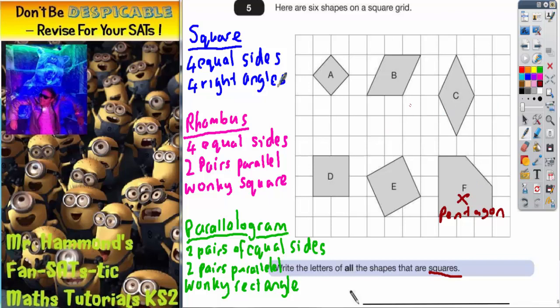Now what else can we say? Well, it's got 4 equal sides and it's got 4 right angles. So which ones have got right angles? Well, shape D, all the sides are equal and it's got 4 right angles. So that's definitely a square. So we can write D on there.